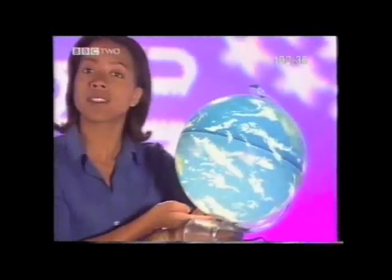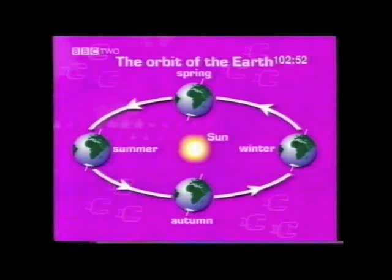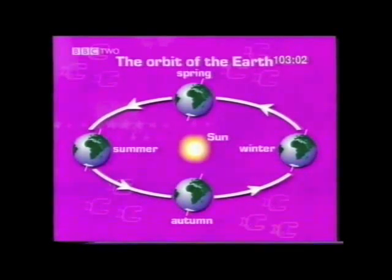The Earth orbits the Sun once every 365 and a quarter days, which makes a year. And it's this combination of the orbit of the Earth and the tilt on its axis that gives us the different seasons. In winter, the North end of the Earth's axis is tilted away from the Sun, meaning in the Northern Hemisphere the weather is colder and nighttime is longer than daytime. This is directly opposite to summer, when the Earth's axis is tilted towards the Sun and the daylight hours are longer.